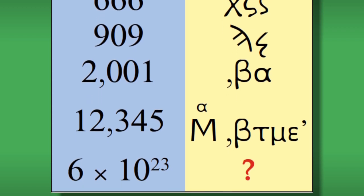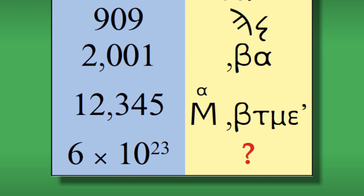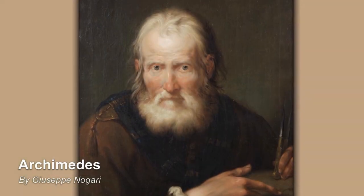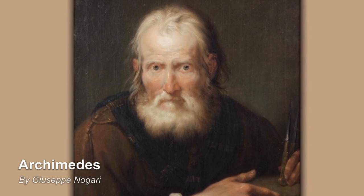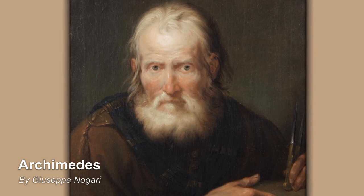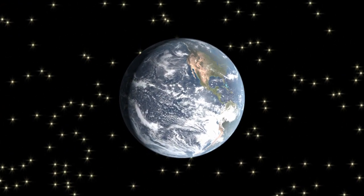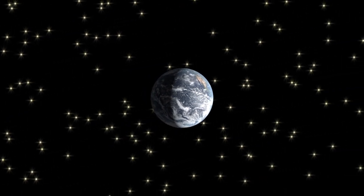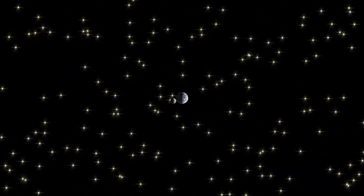So Archimedes invented a system for handling large numbers, a bit like our modern system in scientific notation. And to demonstrate how useful it was, he decided to count how many grains of sand would fit inside the entire cosmos.